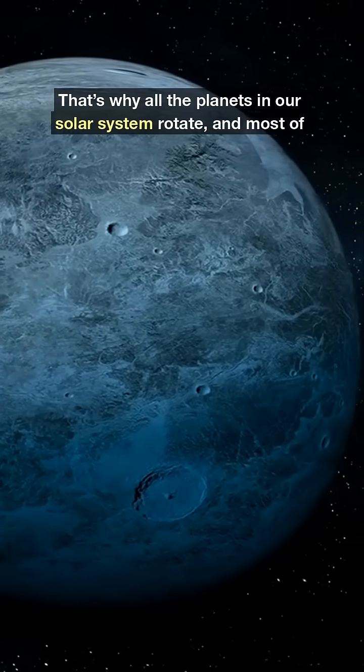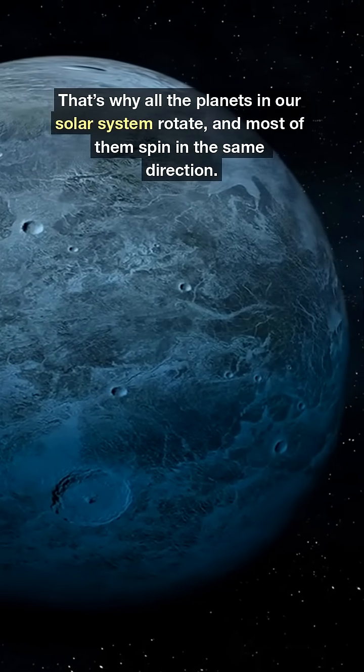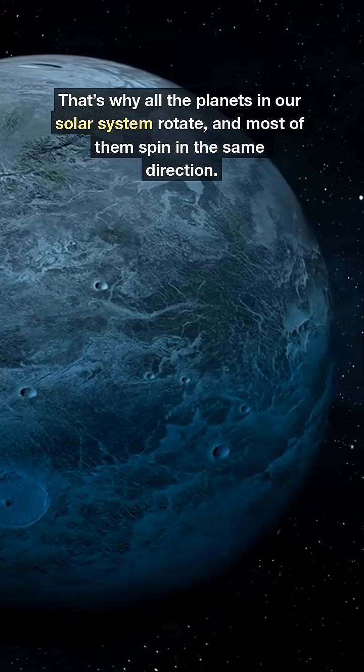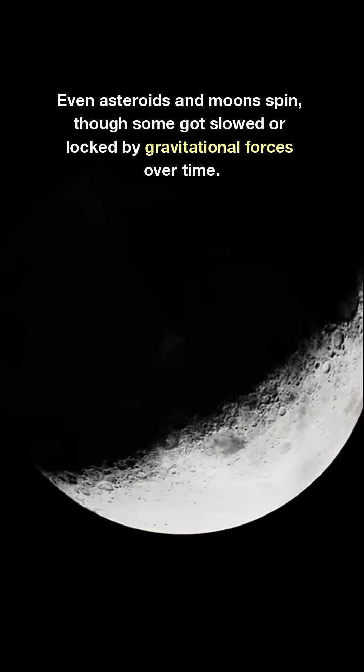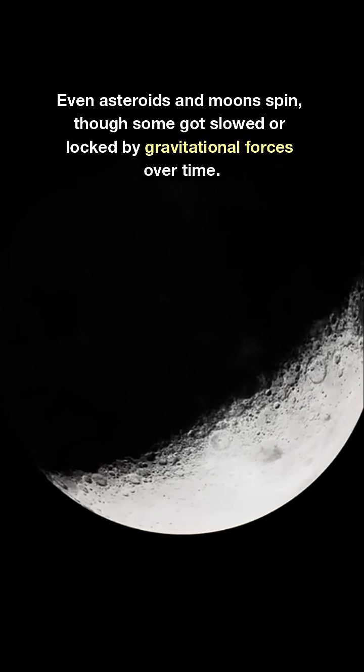That's why all the planets in our solar system rotate, and most of them spin in the same direction. Even asteroids and moons spin, though some got slowed or locked by gravitational forces over time.